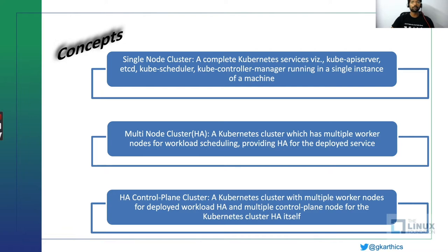With that definition, if you look at single node cluster, it's an irony — a single node cannot really be forming a cluster. But in a Kubernetes context, Kubernetes has multiple components: API server, etcd, scheduler, and controllers, et cetera. A single instance of a machine which comprises all these services to form and provide a complete Kubernetes service is called a single node cluster.